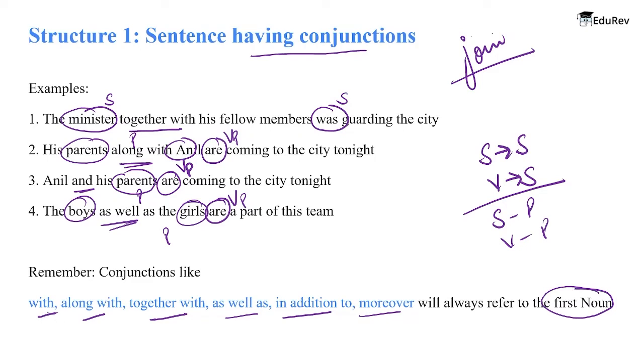Remember: conjunctions like 'with,' 'along with,' 'together with,' 'as well as,' 'in addition to,' and 'moreover' will always refer to the first noun when determining subject-verb agreement.